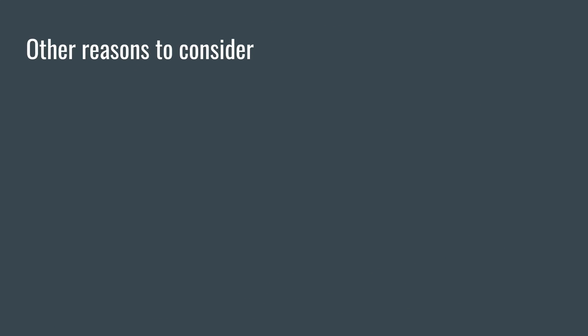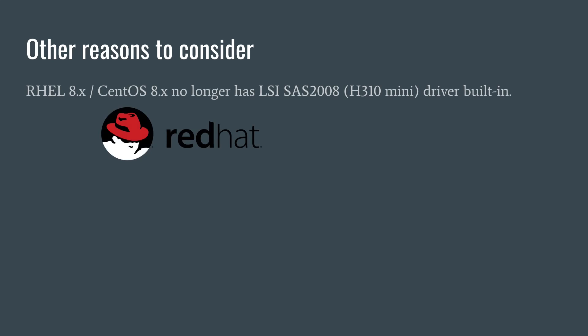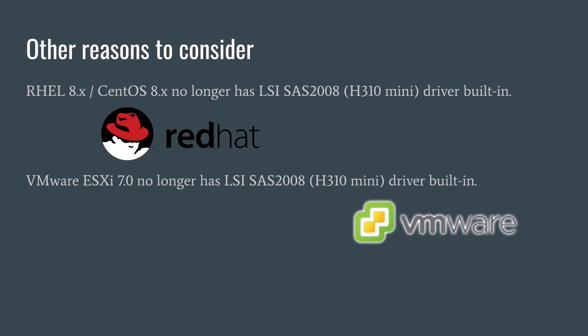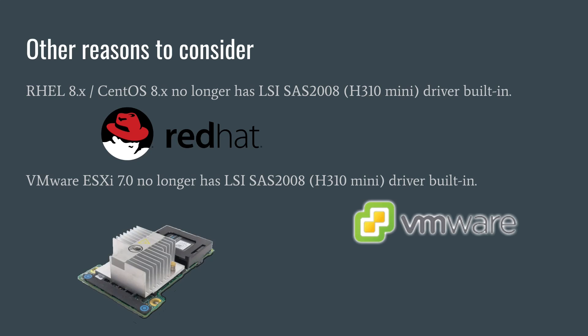There are also non-technical reasons that might influence your choice. Red Hat removed several LSI drivers in RHEL 8, including the SAS 2008 chipset driver which is in the H310. So if you're planning to use RHEL 8 or CentOS 8, the H310 is no longer natively supported, although you can add that driver back using third-party packages. Similarly, the latest VMware ESXi 7.0 has also deprecated the LSI driver for the SAS 2008 chipset. So if you're planning to use one of these operating systems and you don't want to deal with adding third-party driver packages, you might choose the H710 over the H310 based on the OS driver support situation.